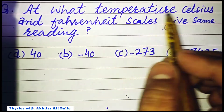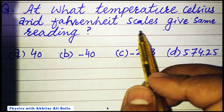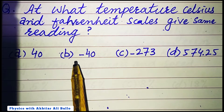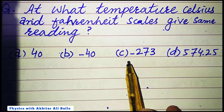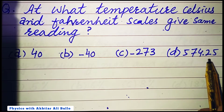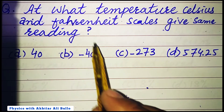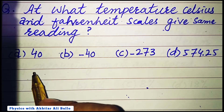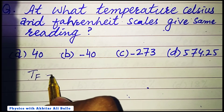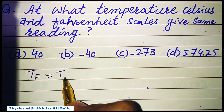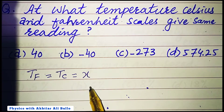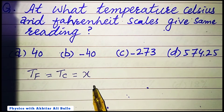At what temperatures do the Celsius and Fahrenheit scales give the same reading? Option A: 40, B: minus 40, C: minus 273, D: 574.25. Suppose that temperature is x, so we have to calculate x.